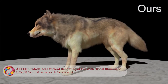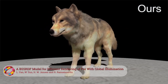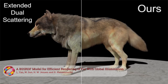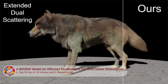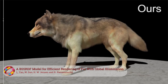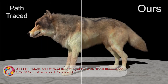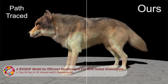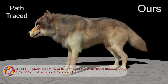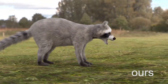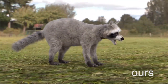Global illumination is necessary to render realistic fur, but is very time-consuming. Efficient methods such as dual scattering are limited to human hair only. In this work, a new model is introduced which approximates light bouncing between individual fur fibres. A simple neural network is used to convert from the fibre's properties to scattering parameters. The result? Realistic fur.